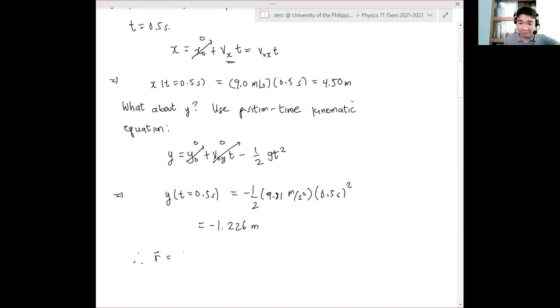We will make this a vector. We have 4.5 meters i hat minus 1.226 meters j hat. It doesn't say magnitude and direction. Therefore, this is an acceptable answer. Just a unit vector form, that's acceptable.